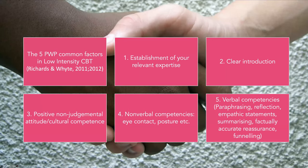Then we have verbal competencies — reflecting back what the person has said to check understanding, paraphrasing to summarise and phrase the next question, using empathic statements, and factually accurate reassurance and funnelling. Funnelling is a key skill within PWP. Factually accurate reassurance is important if given accurately, but we don't want to fall into a disengaging habit that contributes to maintenance of difficulties — either through inaccurate information to make somebody feel better, or giving accurate reassurance too frequently so it becomes a safety-seeking behaviour.